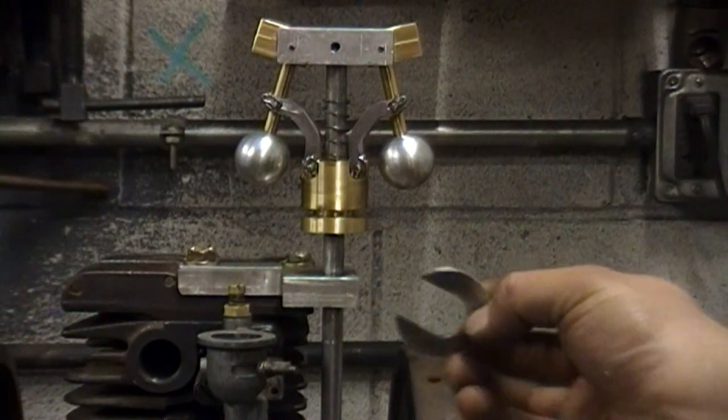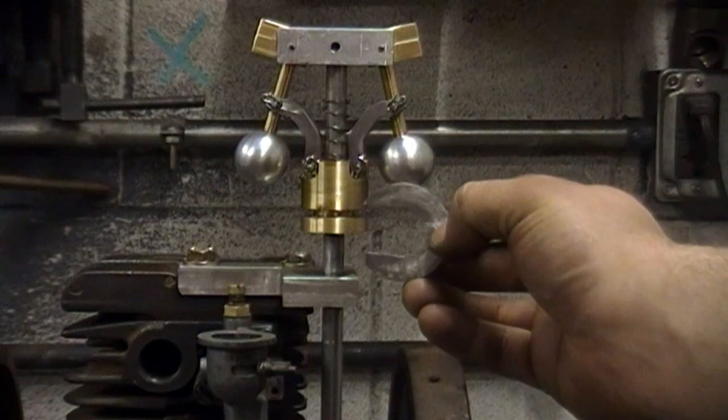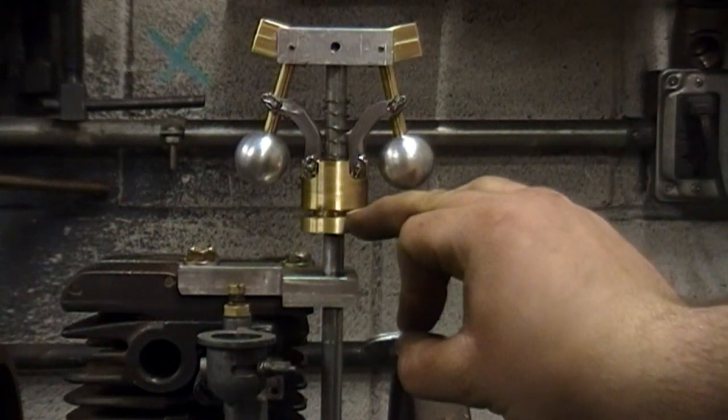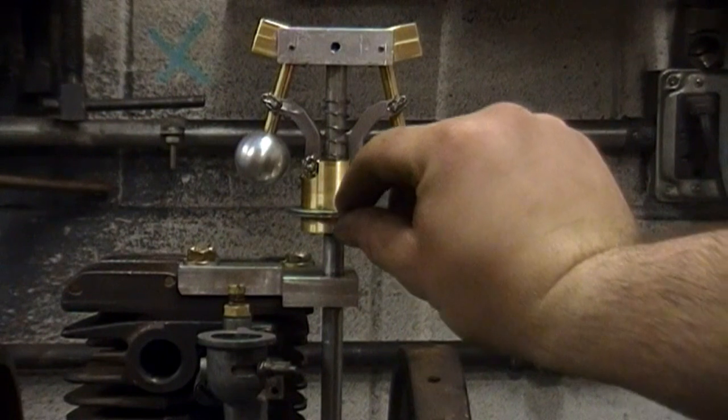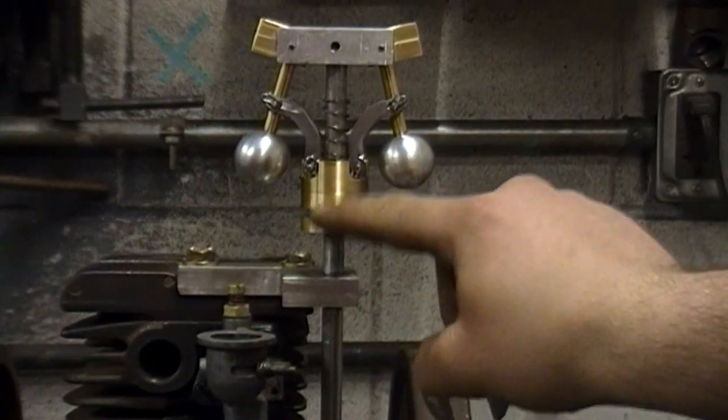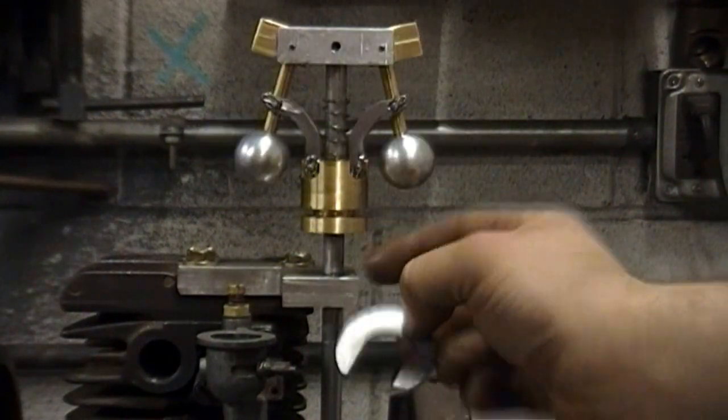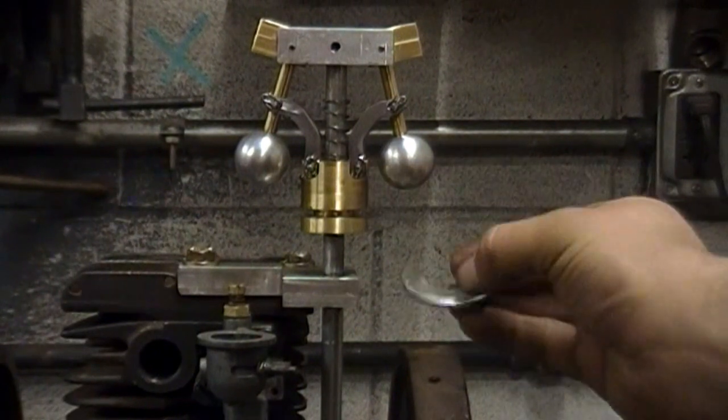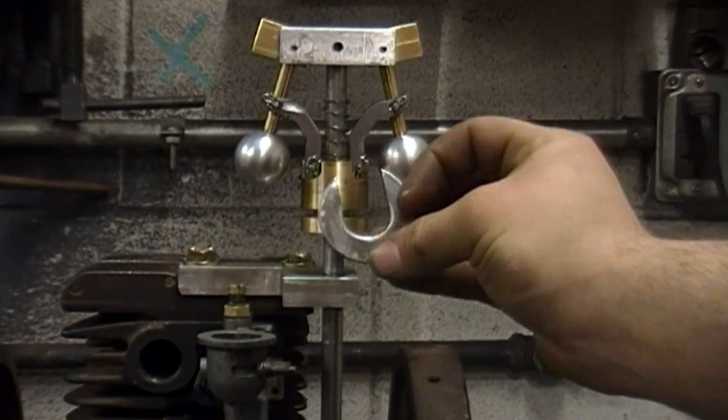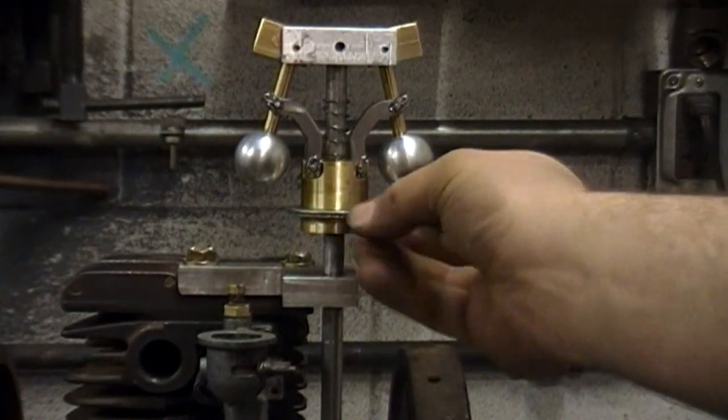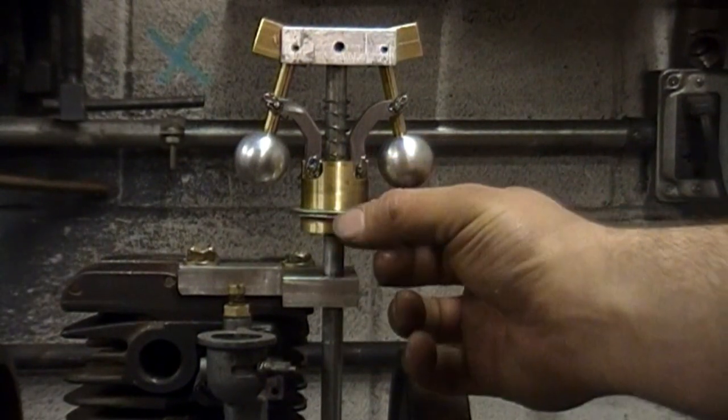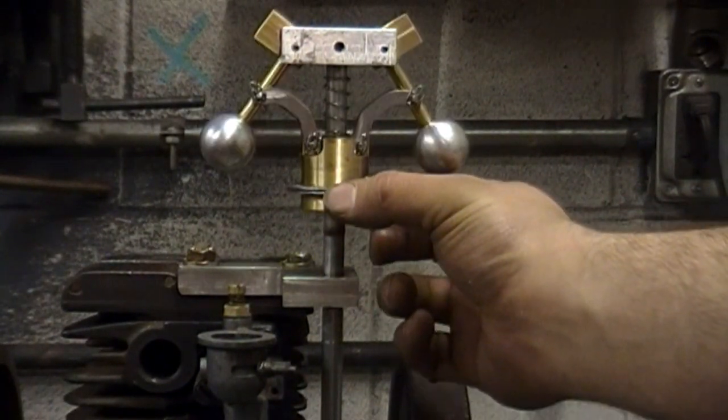This piece here will ride in this groove here. I don't know what you want to call that—I guess I would call that a spindle. This piece of brass, this C-shaped fork, will ride in that groove and travel up and down with the piece of brass.